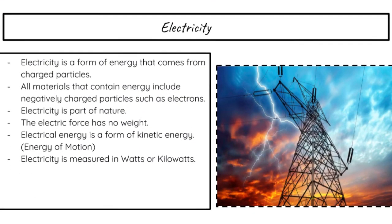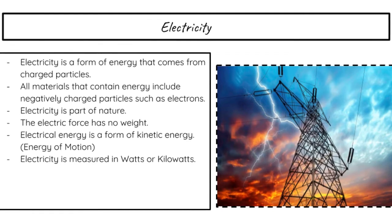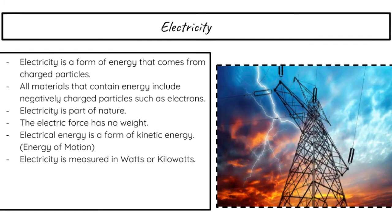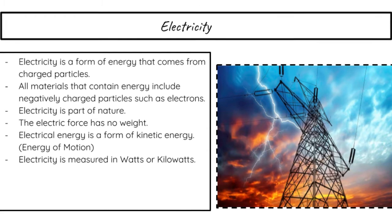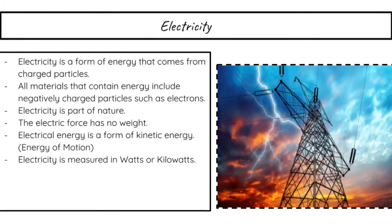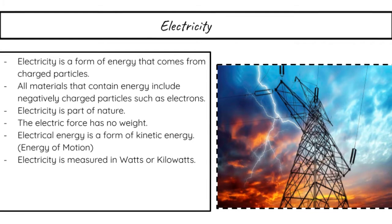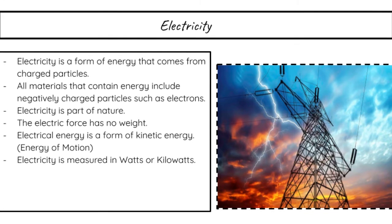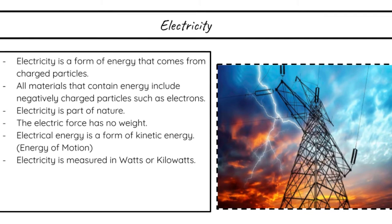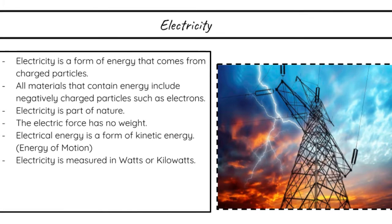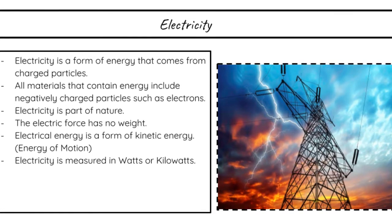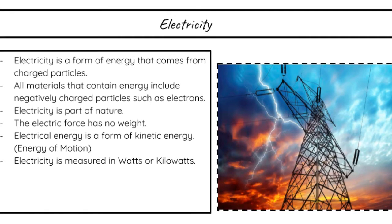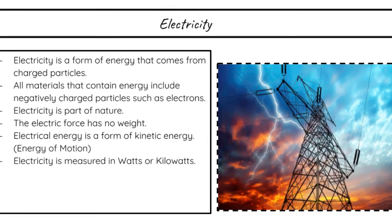Let's start with electricity and its basics. Electricity is a form of energy that comes from charged particles. All materials that contain energy include negatively charged particles such as electrons. Electricity is of course part of nature, but it has no weight. Electric energy is also a form of kinetic energy, which is energy of motion, and it is measured in watts or kilowatts.